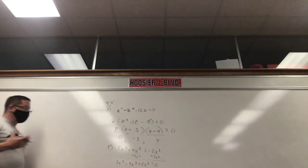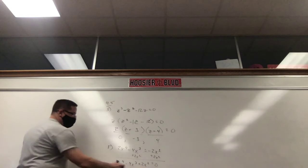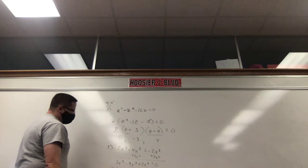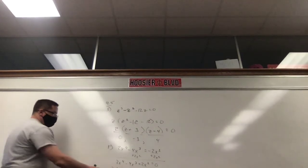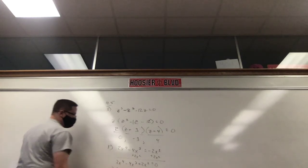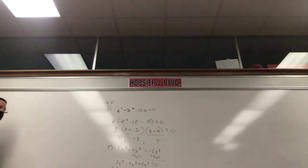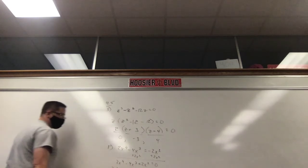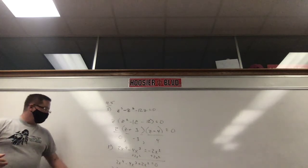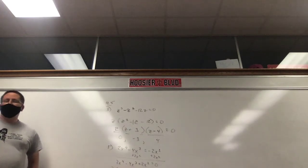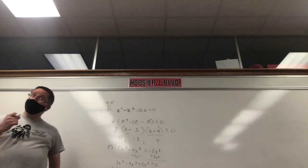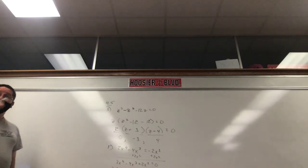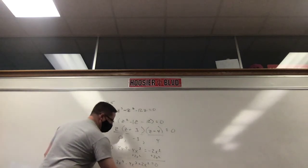We look for a common factor. I could take an x out, or an x², or actually a 2x² — 2 goes into 2, 4, and 2, and they all have at least x². So factor out 2x². We ignore the 2x² outside; draw two sets of parentheses. 2x² times what gives 2x⁴? x². Minus — 2x² times what gives 4x³? 2x. Plus — 2x² times what gives 2x²? 1. Times by 1 means you're not really doing anything.